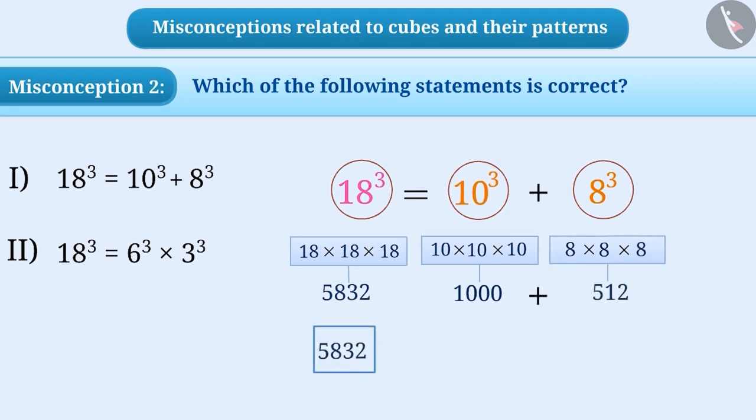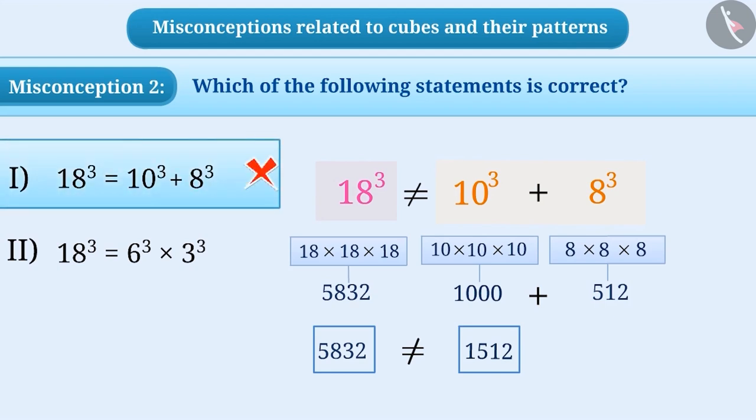And if we add them both, we get 1512. Do you think both sides are equal here? Here, 5832 is not equal to 1512. So both sides are not equal. This shows that the first statement is false. This cannot be the answer for the question.